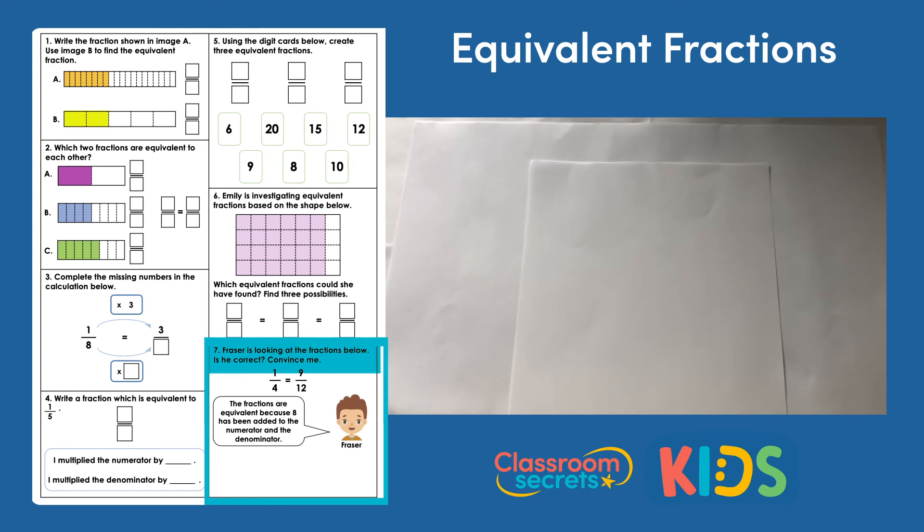Question 7. Fraser is looking at the fractions below. Is he correct? Convince me. Fraser has 1 quarter equal to 9 twelfths. And he's saying the fractions are equivalent because 8 has been added to the numerator and the denominator. So we're thinking about what mistake Fraser's made.